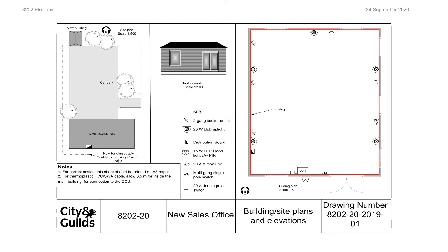Level 2 and level 3 electrical synoptic assessments are always based on a plan. The level 3 plan is often more detailed than the one shown here, and candidates are required to do a much more detailed design, initial verification, and fault-finding tasks based on those scenarios. The level 2 plan is often more basic, where candidates have to carry out a basic design in line with the IET On-Site Guide, as well as safety tasks such as safe isolation and working with access equipment, and then carry out an installation based on the scenario of the plan.